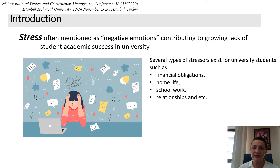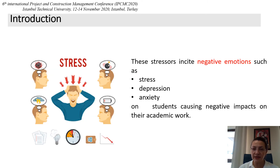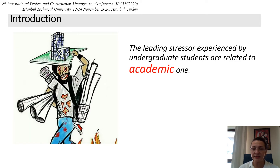Stress is often mentioned as a negative emotion contributing to a growing lack of student academic success in university. There are several types of stressors for university students — for example, financial obligations, home life, school work, relationships, and so on. These stressors incite negative emotions such as stress, depression, and anxiety, causing negative impacts on students' academic work. The leading stressors experienced by undergraduate students are related to academic ones.